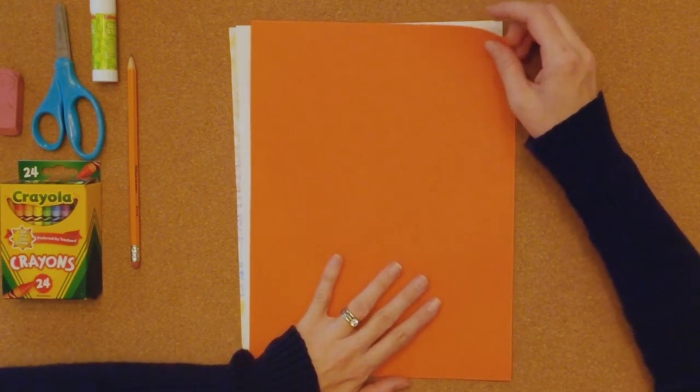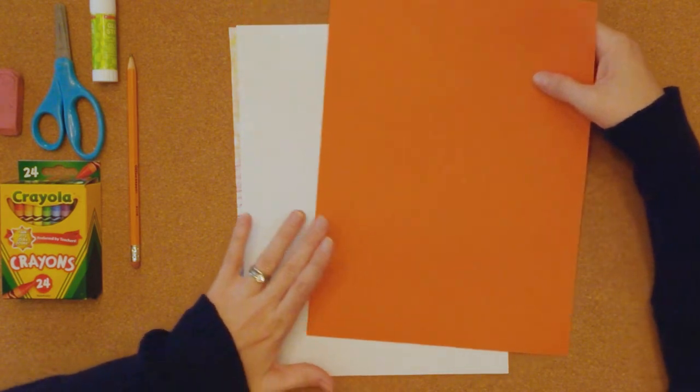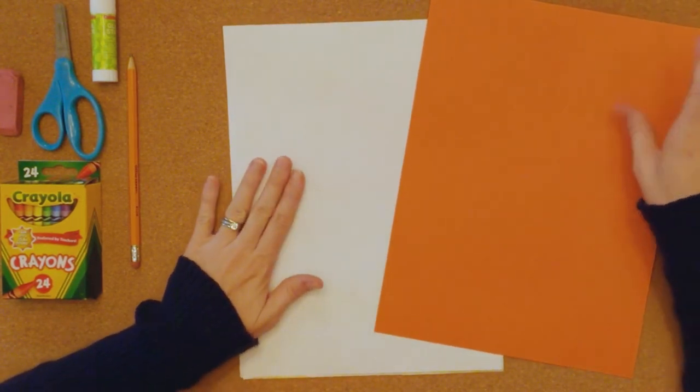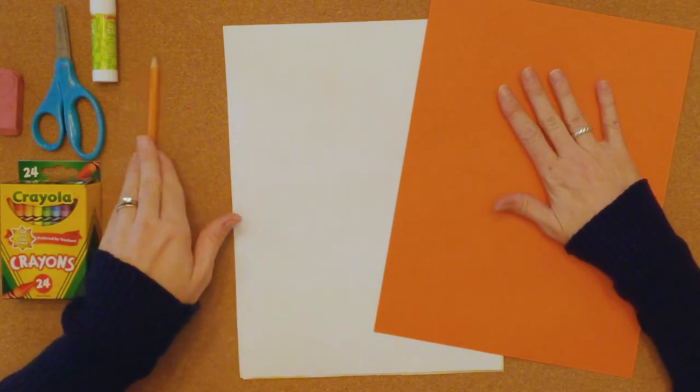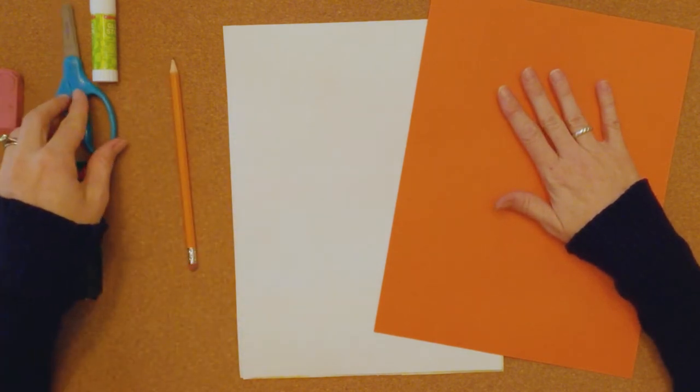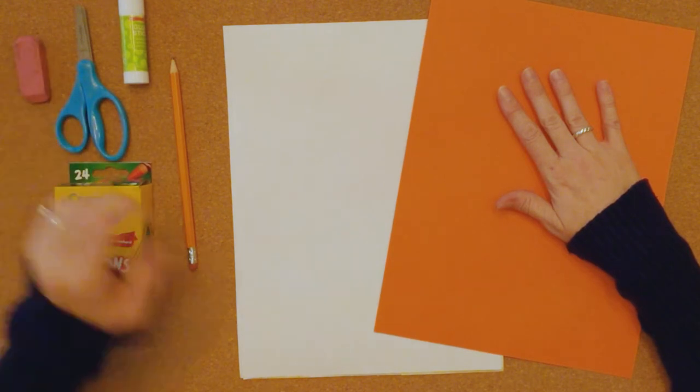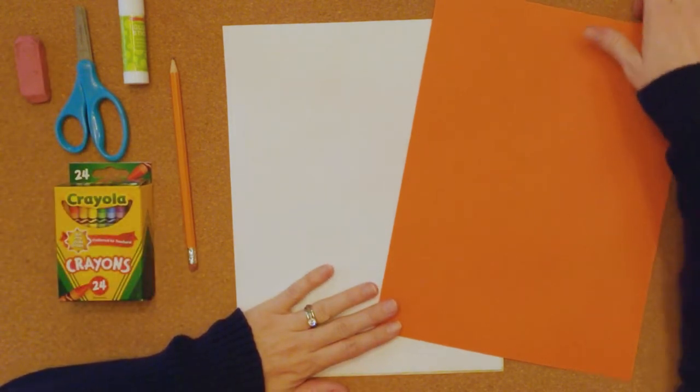So what you'll need today is the orange sheet of paper from your folder and a white sheet of paper. So one white, one orange, a pencil, scissors, glue stick, crayon box. If you have an eraser you may need that and let's go ahead and get started.